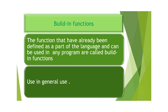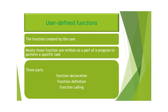اس کے بعد آتا ہے user-defined function۔ جیسا کہ نام سے ظاہر ہے، جب ہم خود سے کوئی function کسی specific task کے لیے create کریں تو اسے user-defined function کہتے ہیں۔ اس کے تین حصے ہوتے ہیں: پہلے function declaration، پھر function definition، اور پھر اسے main function میں call کرتے ہیں۔ Function کی body main function کے باہر لکھ سکتے ہیں، جیسے structure کے ساتھ کرتے تھے۔